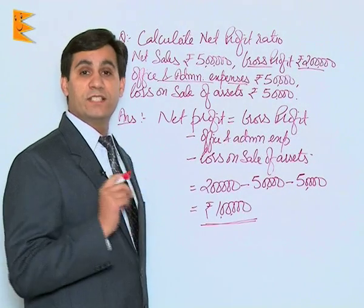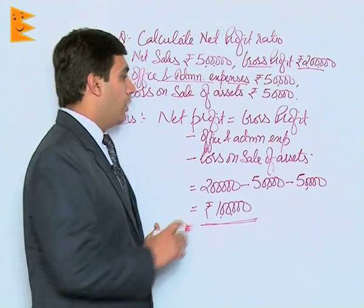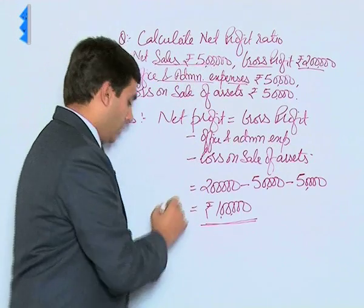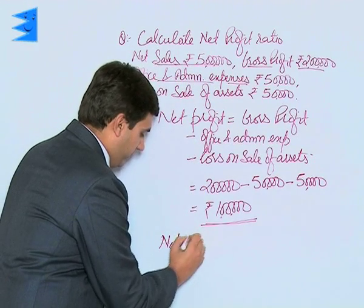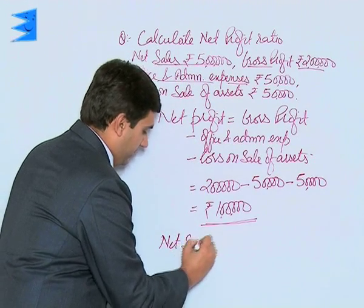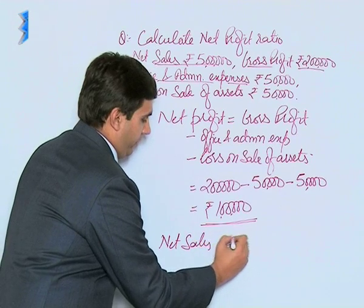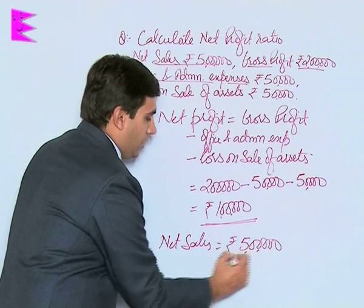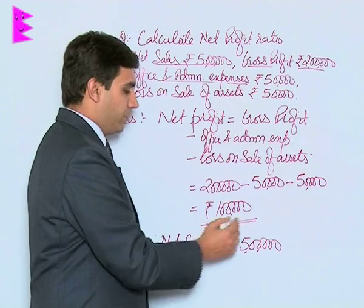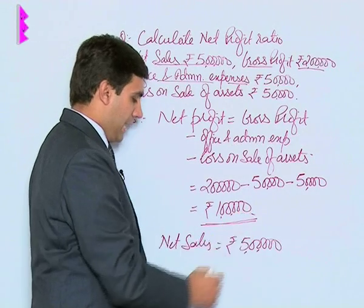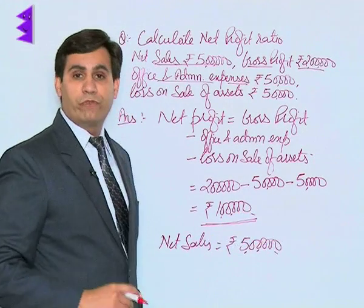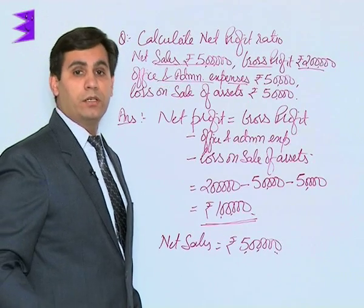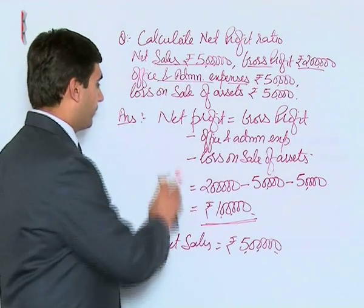Now we have net profit of rupees 1 lakh. The second component in this ratio is net sales. Here in this question, net sales are given to us directly, so net sales will be taken as rupees 5 lakh. Now we have both components: net profit equal to 1 lakh and net sales equal to 5 lakh. Let us apply the formula for net profit ratio.